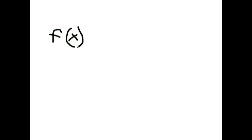Let's take a look at a few examples. Let's look at f(x) equals x over 2, where x maps from all real numbers to all real numbers. This function is injective, or one-to-one, because every number is half of only exactly one other number. For no number can you have two different numbers that are double that number.